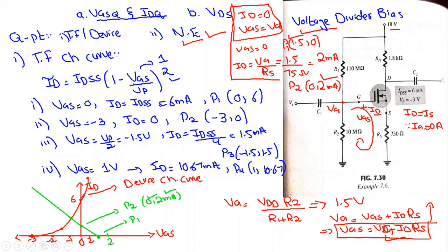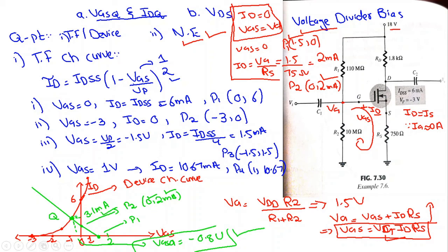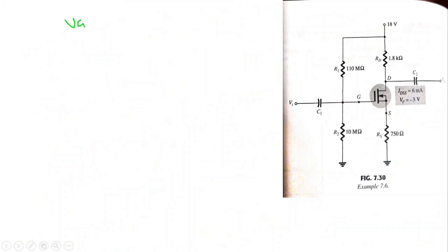The intersection of the load line curve and the transfer characteristic curve is the Q-point, also called the quiescent or operating point. Reading off the axes, IDQ = 3.1 mA and VGSQ = −0.8V. This completes the first part: finding the Q-point.